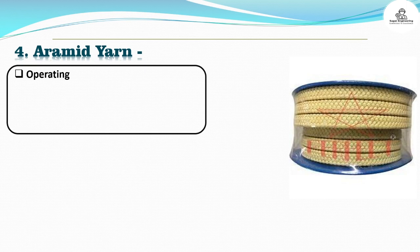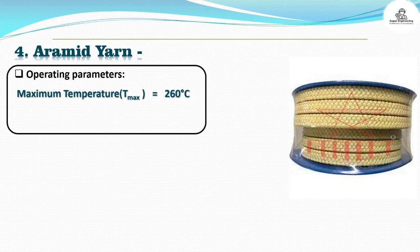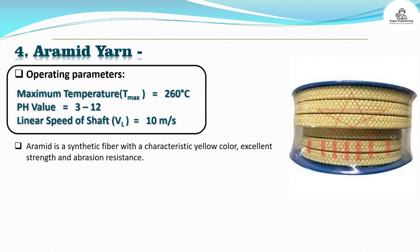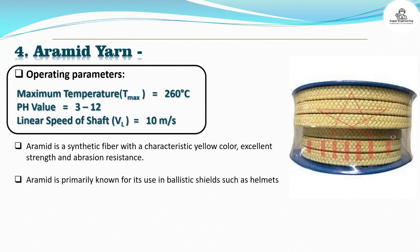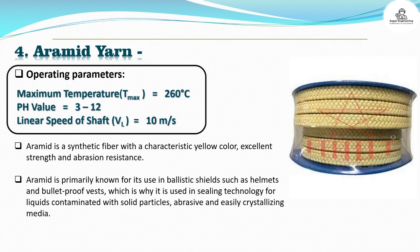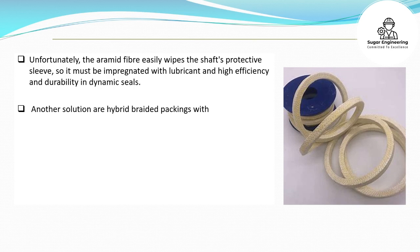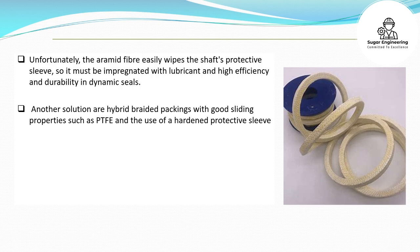4. Ermid yarn. Operating parameters: Maximum temperature (TMX) is equal to 260 degrees Celsius. pH value is equal to 3 to 12. Linear speed of shaft (VL) is equal to 10 meters per second. Ermid is a synthetic fiber with a characteristic yellow color, excellent strength and abrasion resistance. Ermid is primarily known for its use in ballistic shields such as helmets and bulletproof vests, which is why it is used in sealing technology for liquids contaminated with solid particles, abrasive and easily crystallizing media. Unfortunately, the ermid fiber easily wipes the shaft's protective sleeve, so it must be impregnated with lubricant for high efficiency and durability in dynamic seals. Another solution is hybrid braided packings with good sliding properties such as PTFE, using a hardened protective sleeve of the shaft with hardness of 50 to 60 HRC.